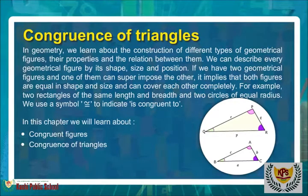If we have two geometrical figures and one of them can superimpose the other, it implies that both figures are equal in shape and size and can cover each other completely. For example, two rectangles of the same length and breadth, and two circles of equal radius. We use a symbol to indicate 'is congruent to'. In this chapter we will learn about congruent figures and congruence of triangles.